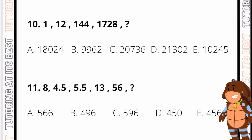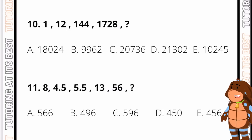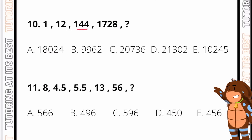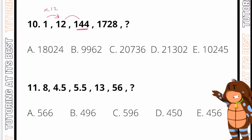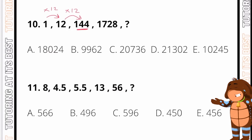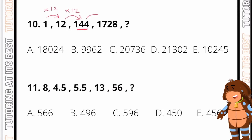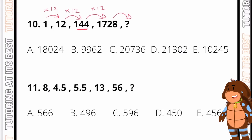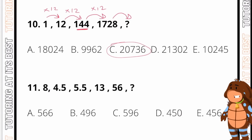For question 10, let's look at what's common. We need to get from 1 to 12, and 144 is a square number. So perhaps we're multiplying by 12 each time: times 12, times 12. And if we go ahead and times 1728 by 12, that would give us 20,736. And that is our answer.